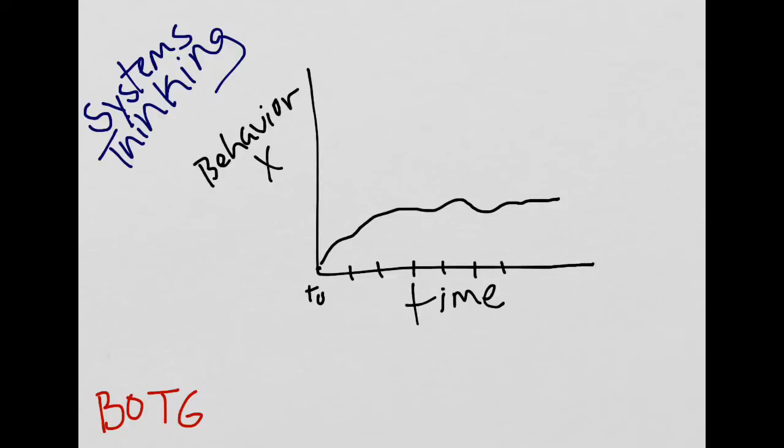Because cause and effect may not always be closely related in time, a behavior or an action that we start today may not have consequences in the system until much, much later, sometimes years later.